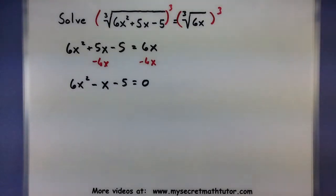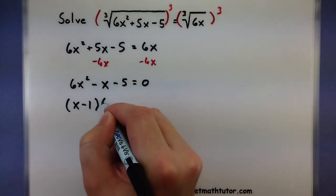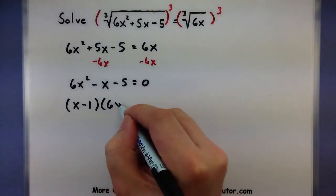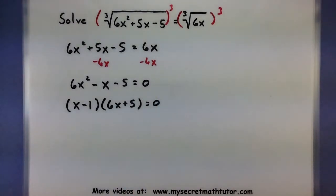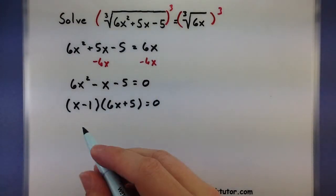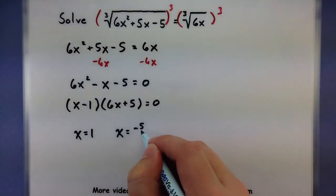All right, this guy actually factors and it's not too bad. You get x minus 1 and 6x plus 5. So it looks like we have two possible solutions for our equation. x could equal 1 or x could equal a negative 5 sixths.